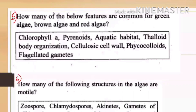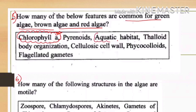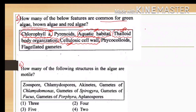The next question asks how many features are common for all green, brown, and red algae. Chlorophyll a is universally present from blue-green algae to higher plants. Aquatic habitat is common to all algae. Thalloid body organization is present, meaning vascular tissues are absent. Cellulosic cell wall is also common. Alginic acid is found only in brown algae and agar only in red algae, so phycocolloids are not universal. Flagellate gametes are absent in red algae.